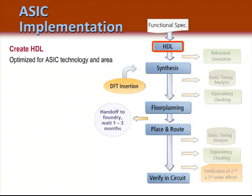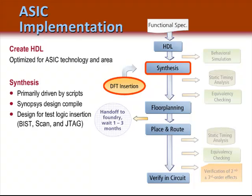With ASIC implementation, you have to build your HDL using the ASIC technology library. With FPGAs, you will also need to optimize your design by instantiating dedicated resources and writing effective HDL code. Synthesis flows for ASICs are primarily driven by scripts using Synopsys Design Compiler or other tools. The ASIC design flow includes inserting design-for-test logic, which is not necessary for FPGAs. This is because the JTAG logic resources are already embedded in the FPGA and have already been verified — they require no coding or testing, and every FPGA has these resources. Built-in self-test (BIST) and scan logic are typically not included in FPGAs.